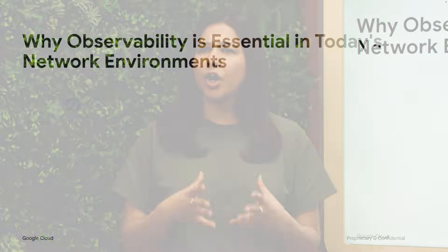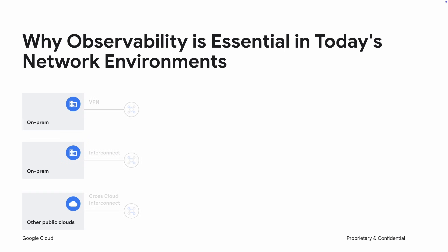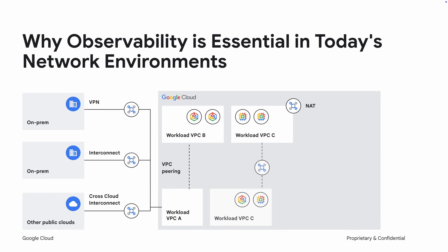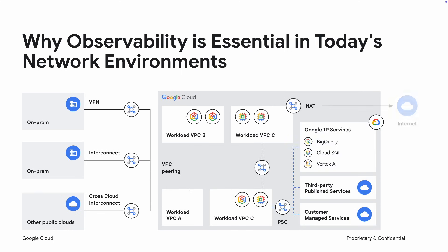So why is observability essential in today's complex networks? Modern networks span on-premises data centers, multiple cloud providers, and countless interconnected network resources within your GCP deployment. As you scale, you introduce more complexity. To effectively monitor and troubleshoot this network, you require tools that can provide detailed insights into your network traffic.